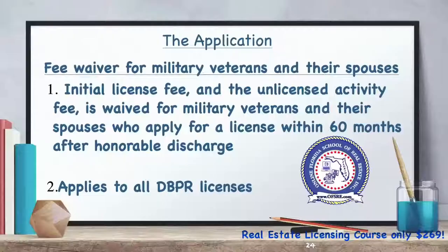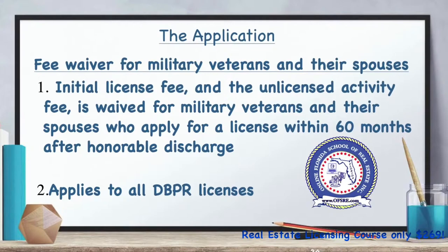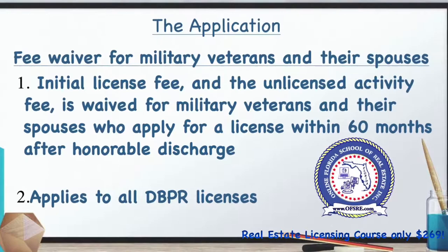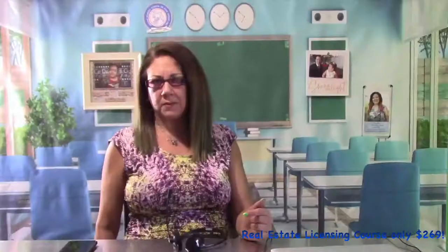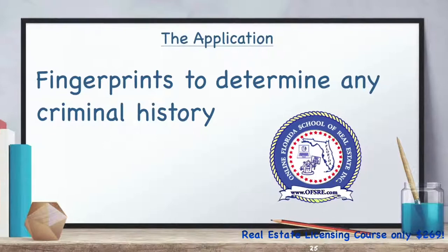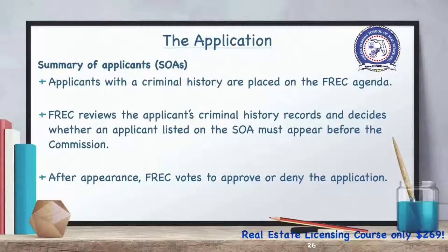The DBPR waives the initial application fee, the initial license fee, and the unlicensed activity fee for military veterans and their spouses who apply for a real estate license within 60 months after honorable discharge from the armed services. Applicants must also submit their fingerprints electronically as part of the license application process.